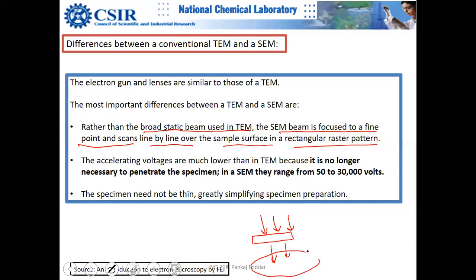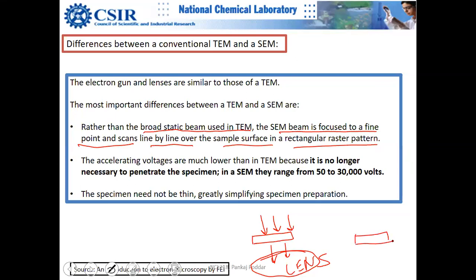TEM has very strong lens systems on both sides of the sample, making it much larger than SEM. TEM is more sophisticated in comparison to SEM because the lens system is roughly twice as complex. In SEM, there is no lens system beyond the sample, which makes SEM cheaper, simpler, and more compact.